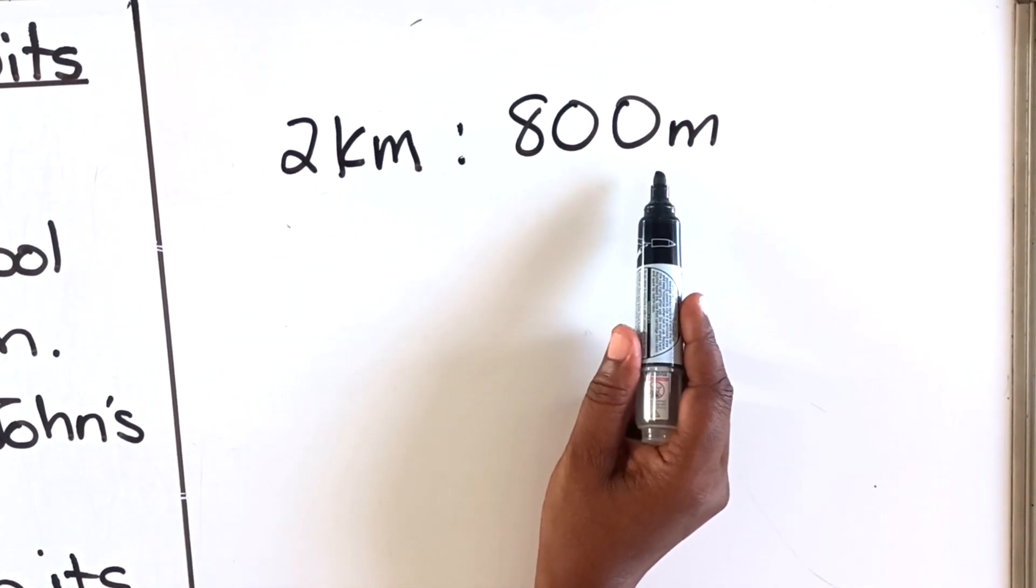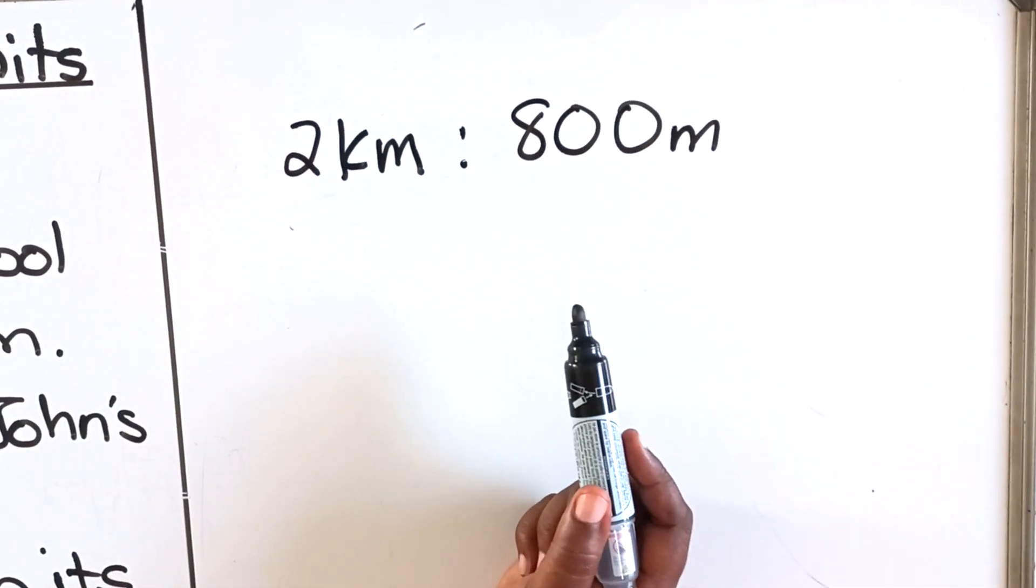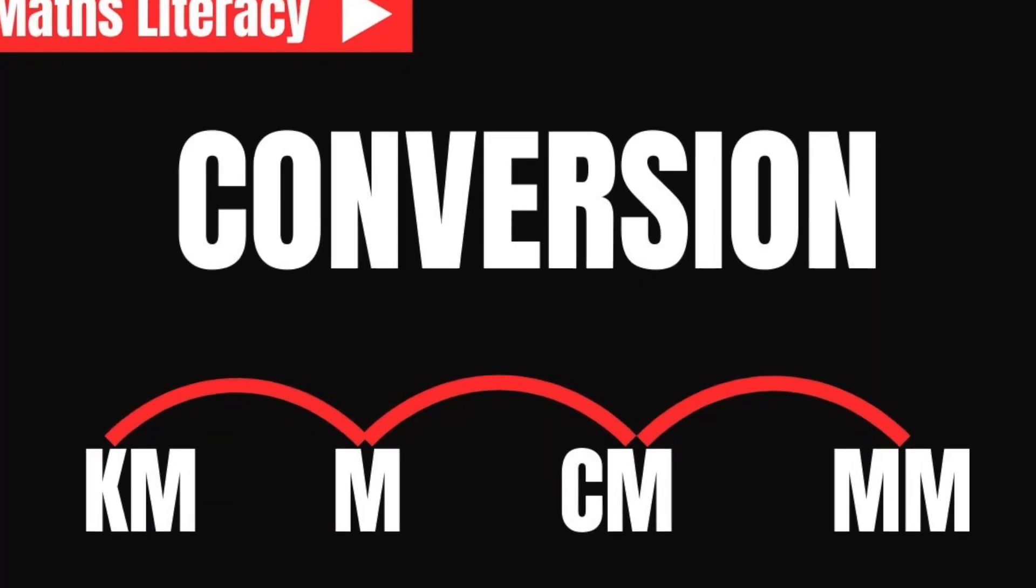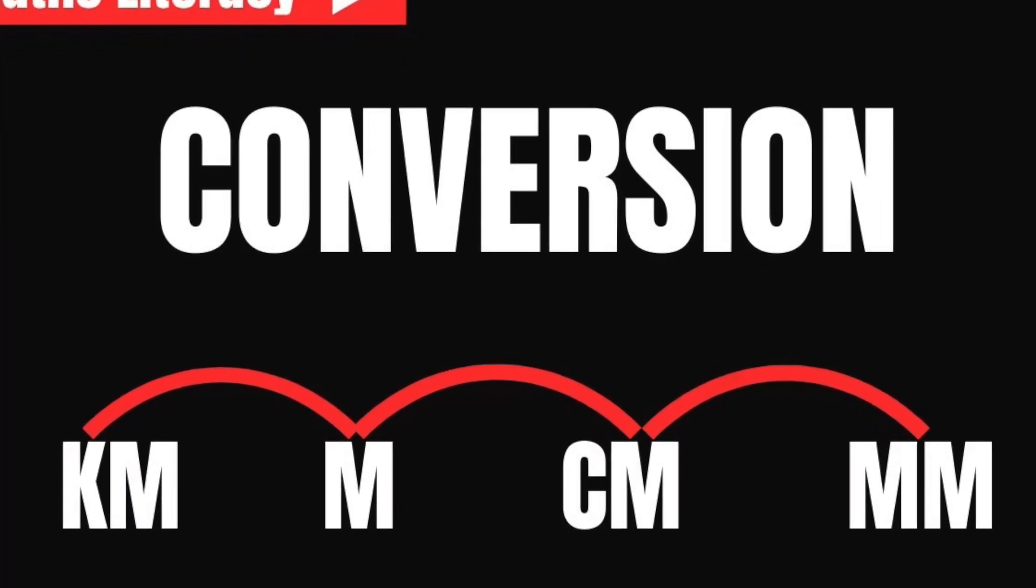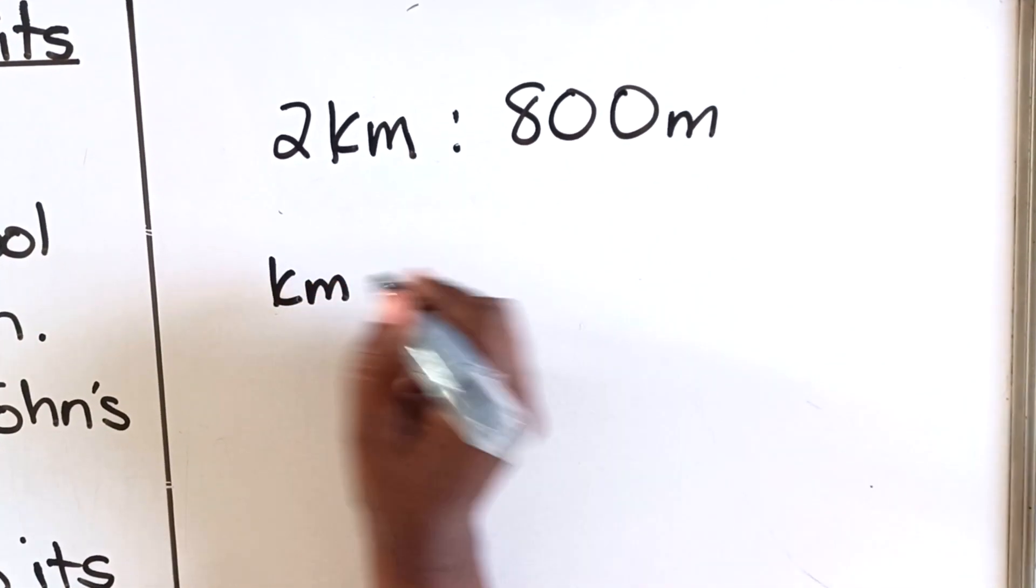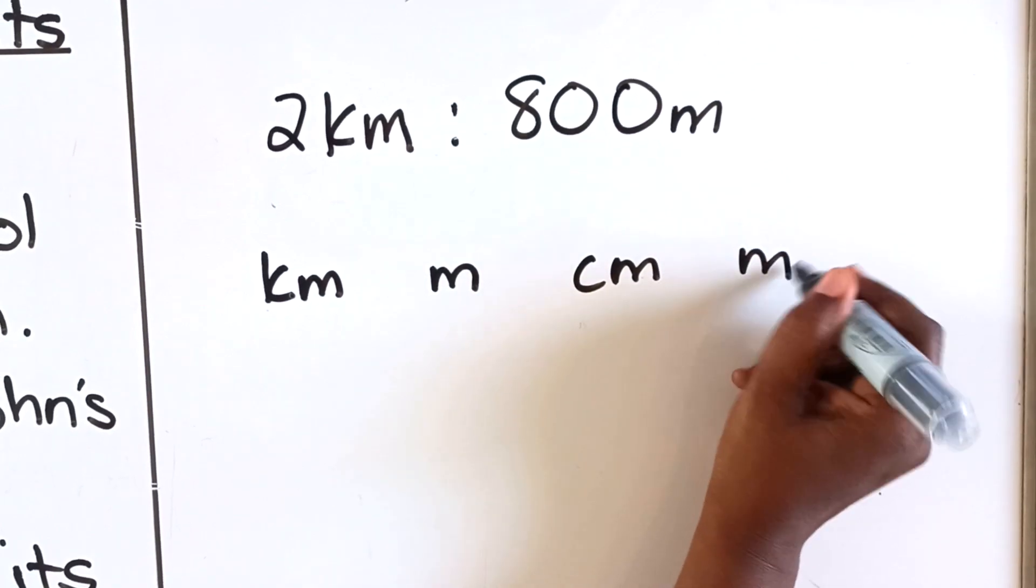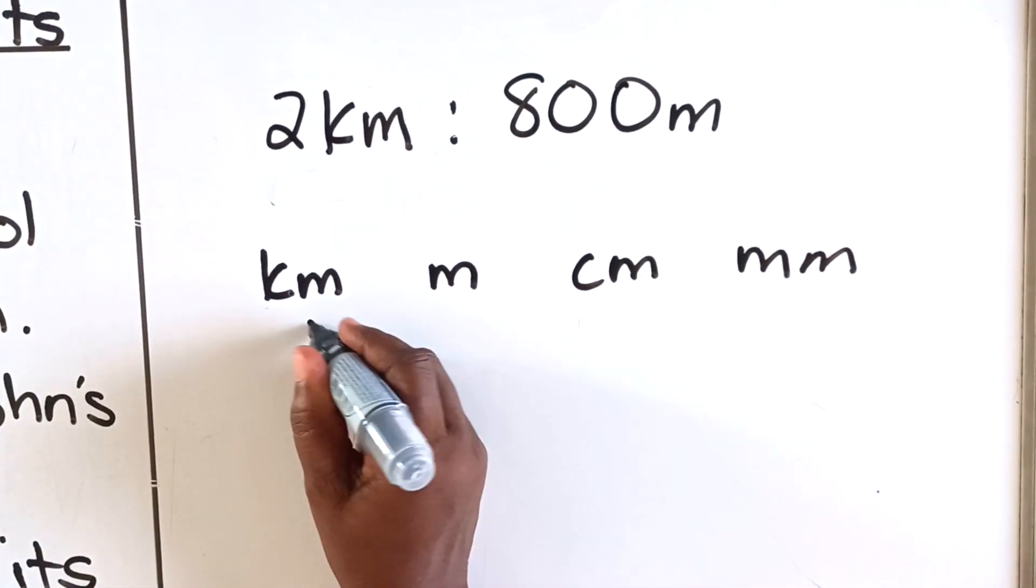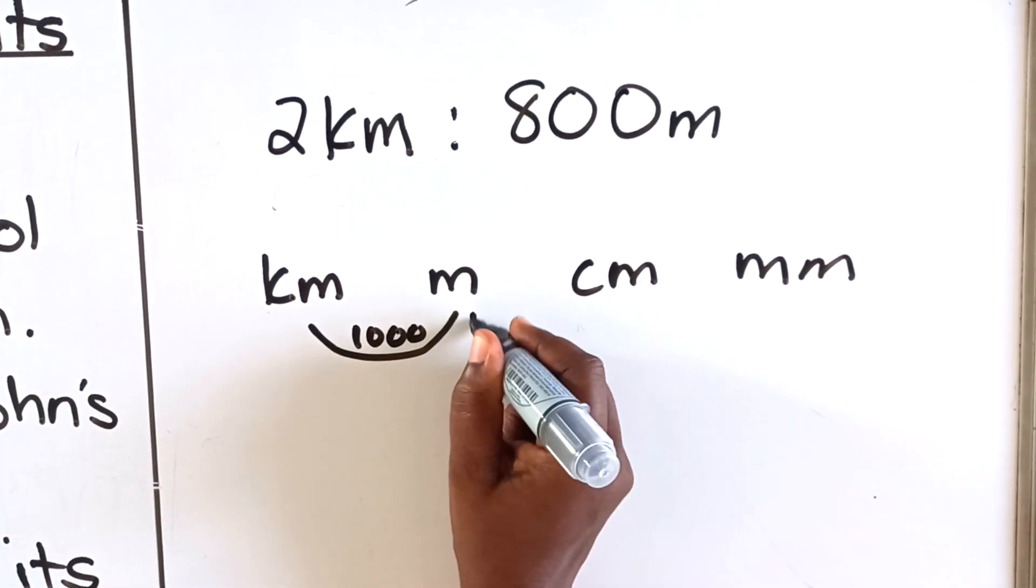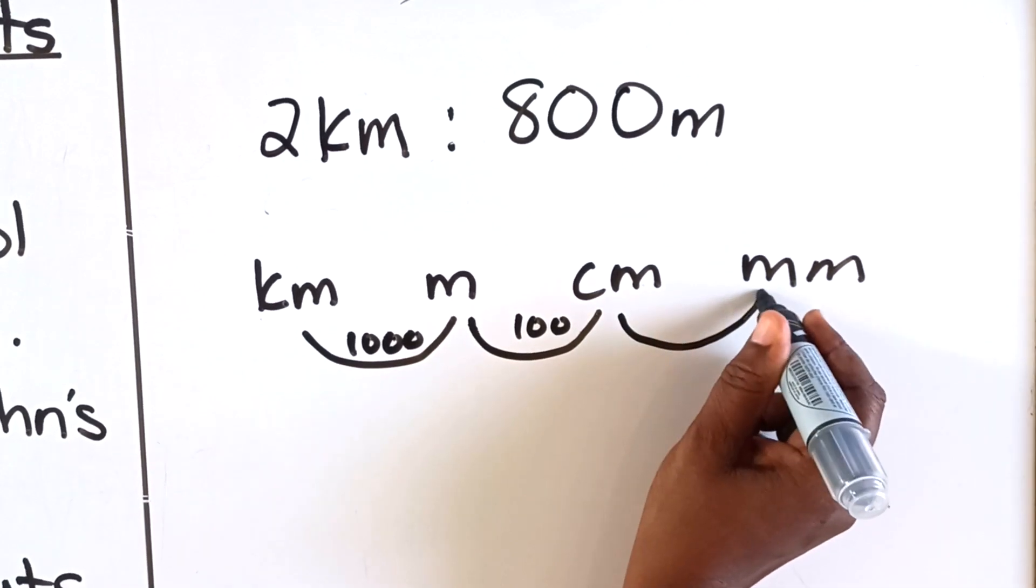When you look at these units, these are kilometers and these are meters, so they are not in the same unit. Your first thing is to write them in the same unit. We have a video in our channel that shows you how to convert, but I'm going to do that quickly here again. You have kilometer, meter, centimeter, and then millimeter. When you convert from kilo to meter it's 1000, from meter to centi it's 100, and from centi it's 10.